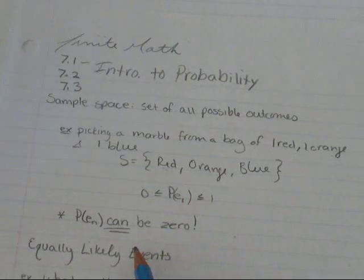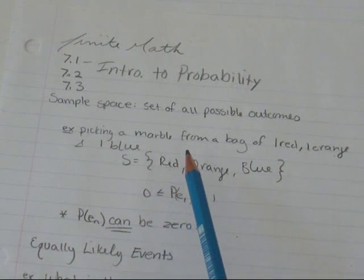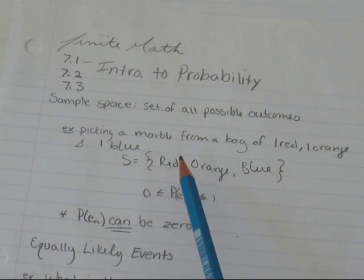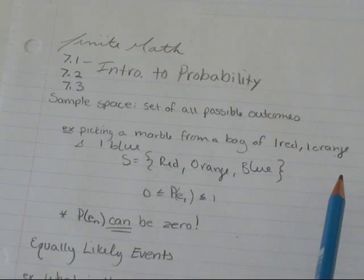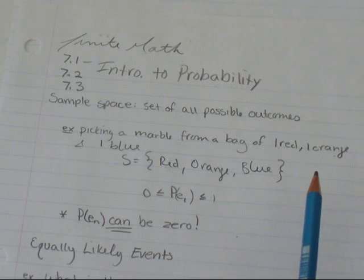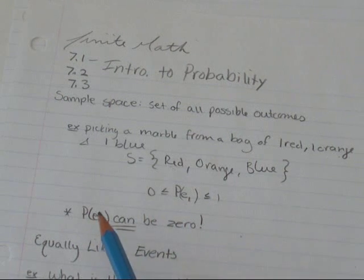It can also be one. So, for instance, in this question, if I said, what's the probability of picking a purple marble? Well, there is no purple marble in the bag that I'm picking from. So, the probability of a purple marble would be zero.